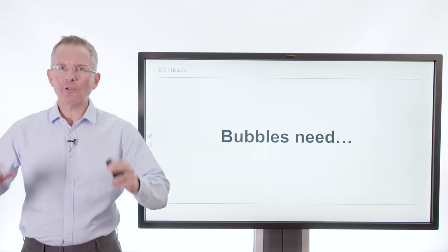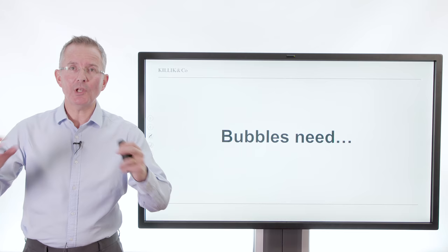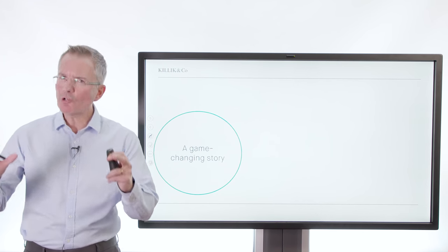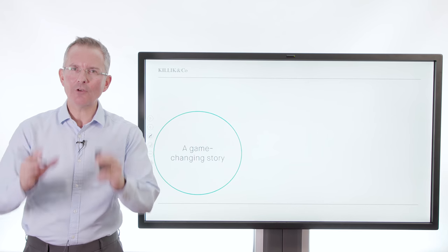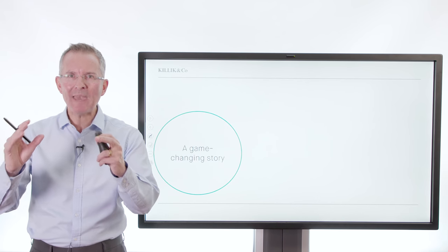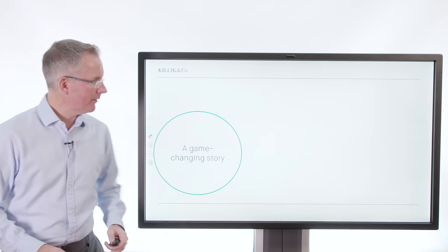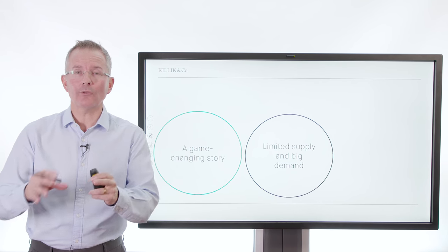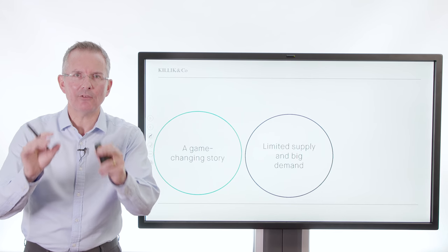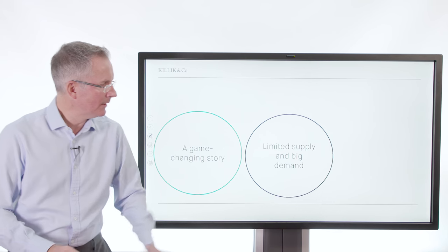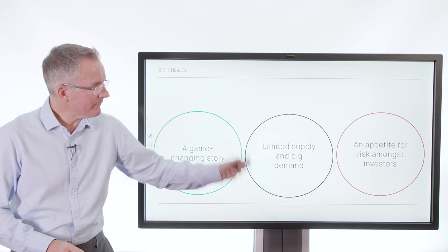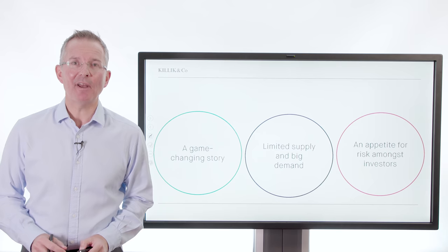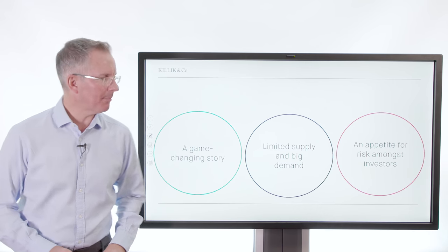What do bubbles need? Because investors are not completely stupid — neither are gamblers. What's the toolkit to create a bubble? Number one: a game-changing story. Not just a story — a game-changing story that appeals to people on a wide scale. Number two: limited supply, actual or creative. You need to sell the idea there's limited supply — get in early, get in now — and big demand. Number three: an appetite for risk amongst investors. It helps if people are feeling bored and want some action.